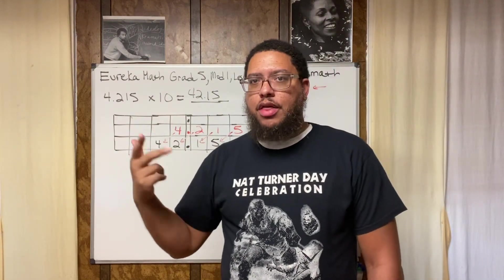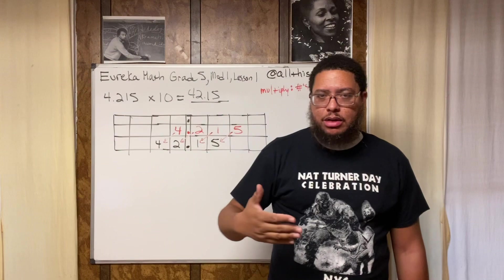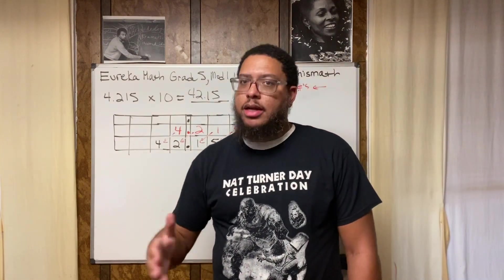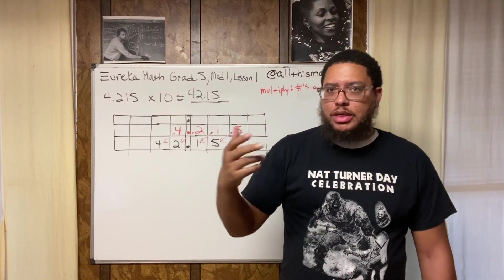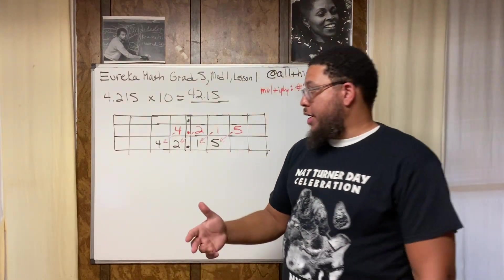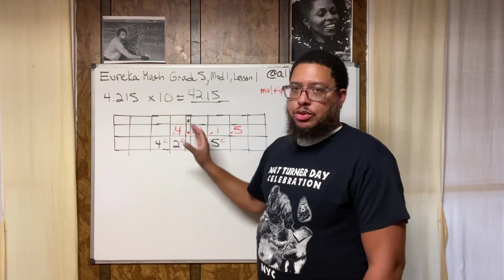Now this only applies if you multiply by factors or multiples of 10: 10, 100, 1,000, 10,000, 100,000, million, 100 million, all that. One-tenth, one-hundredth, one-thousandth, one-ten-thousandth, one-hundred-thousandth, and so on and so forth. We can use the place value chart.